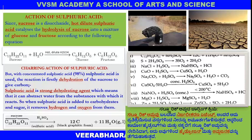Now let us discuss what happens when concentrated sulfuric acid — about 98% — is used. First, dehydration occurs. Dehydration is nothing but the removal of a water molecule from the respective compounds. Sulfuric acid is a strong dehydrating agent, which means it can abstract water from the substance with which it reacts. When sulfuric acid is added to carbohydrates and sugar, it removes hydrogen and oxygen.